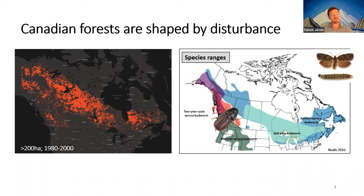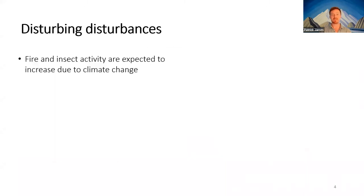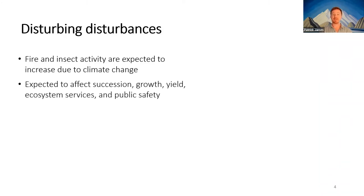These disturbances overlap and interact with one another, although we've spent a lot more time focusing on how each disturbance behaves individually. Both fire and insect activity are expected to change due to climate change, and these changes are expected to influence forest succession, growth, yield, ecosystem services, and public safety — as we've seen with recent evacuation challenges from large wildfires in western Canada.